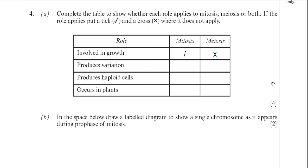Produces variation. Mitosis doesn't. But meiosis does because meiosis produces gametes which show variation. That's why we all look slightly different from each other.